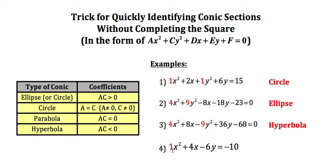So 1 times 0 is 0. That falls in the category of the parabola, so then my last example there is a parabola.